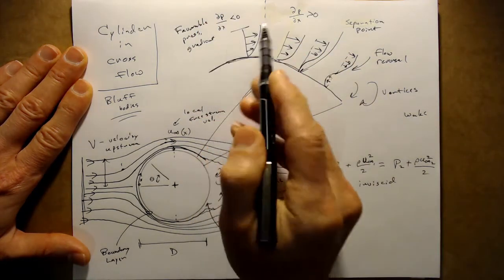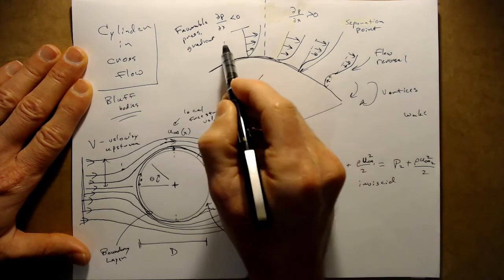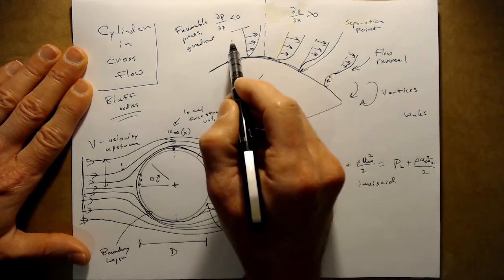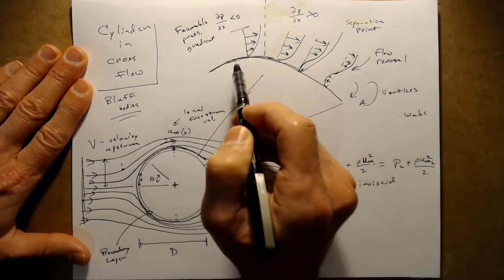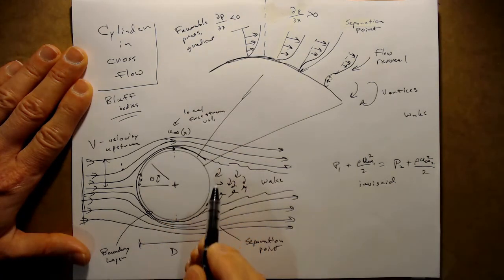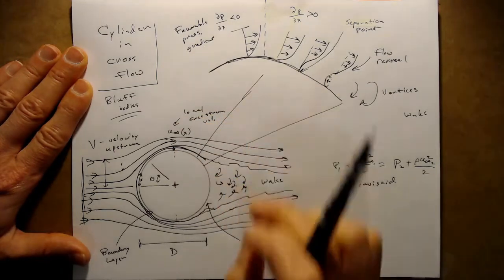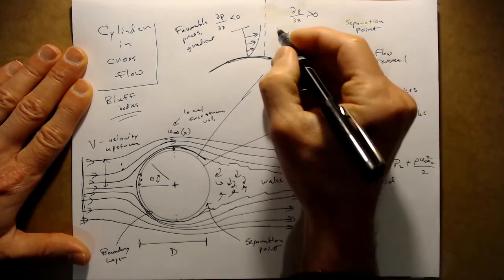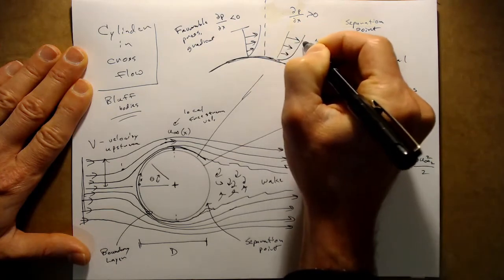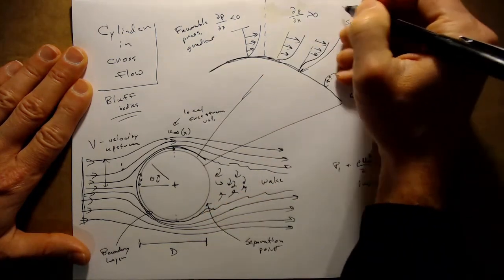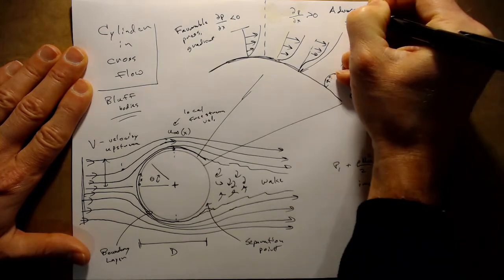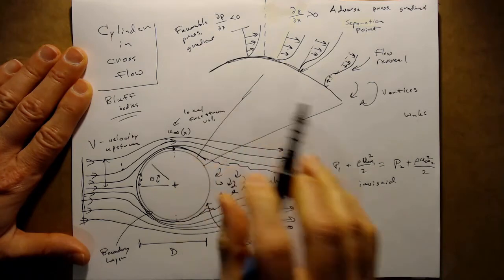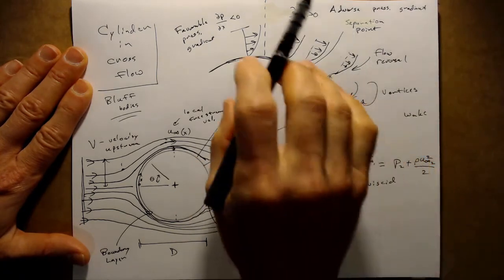We call this a favorable pressure gradient because the pressure further along the flow is lower, which tends to push the fluid forward — fluid naturally flows from higher to lower pressure. However, on the back half of the cylinder, the streamlines start to re-expand and Bernoulli's equation tells us the pressure must start increasing again. The pressure at a downstream point is now higher than at an upstream point. This is a problem, and we call this an adverse pressure gradient.